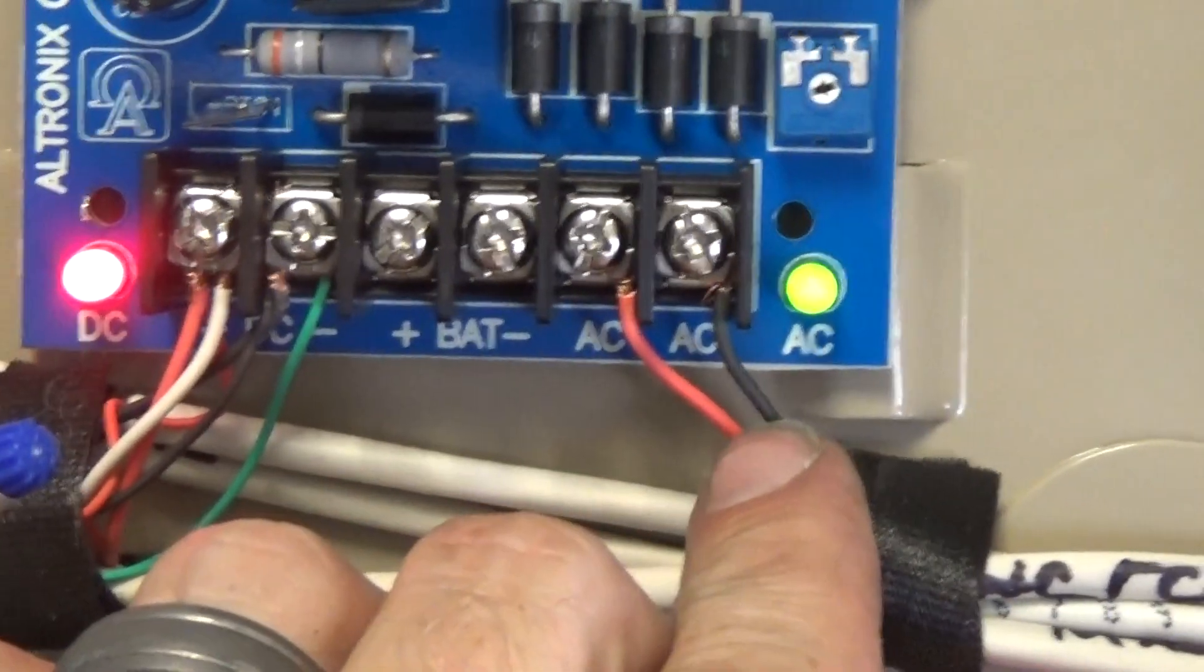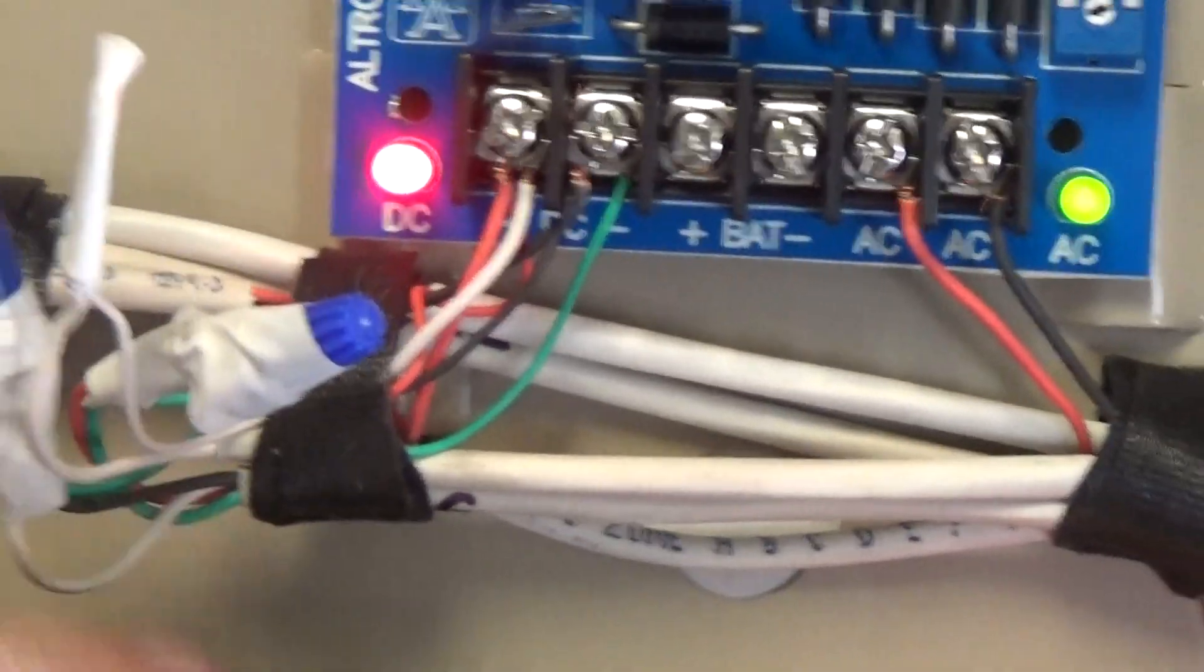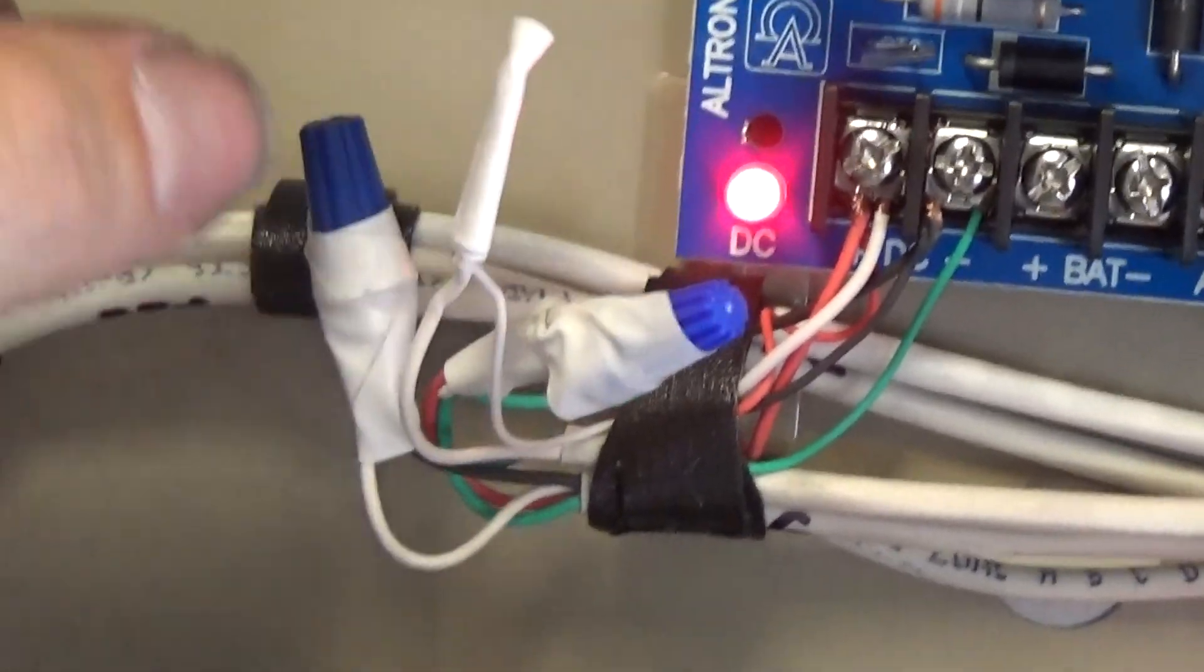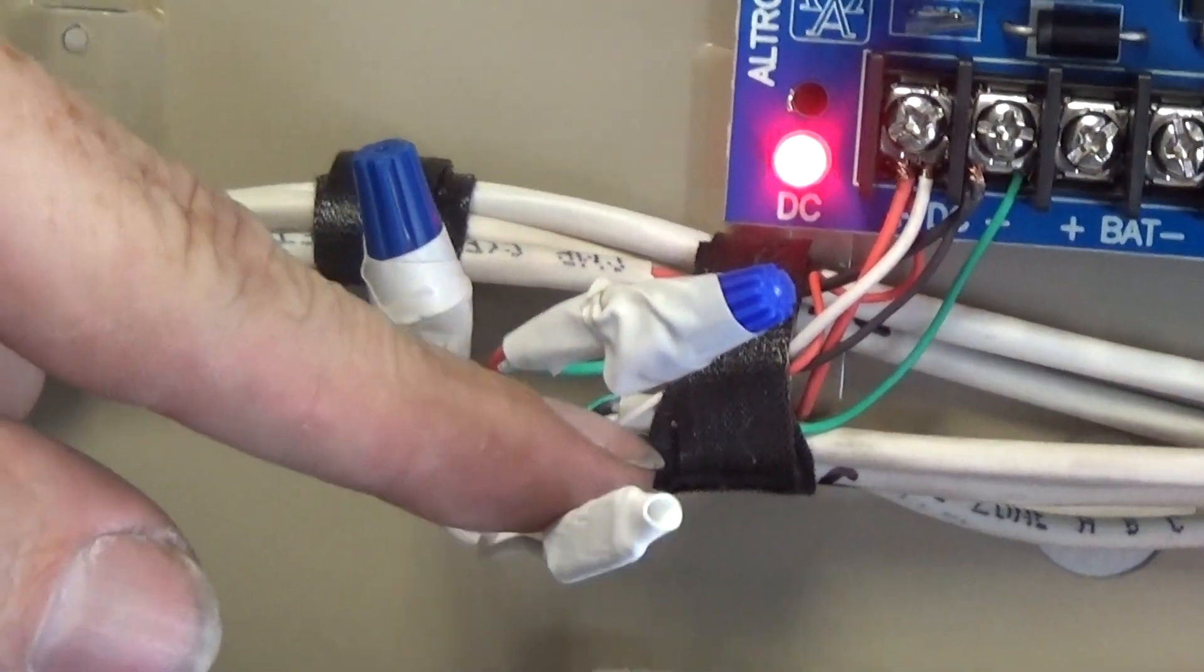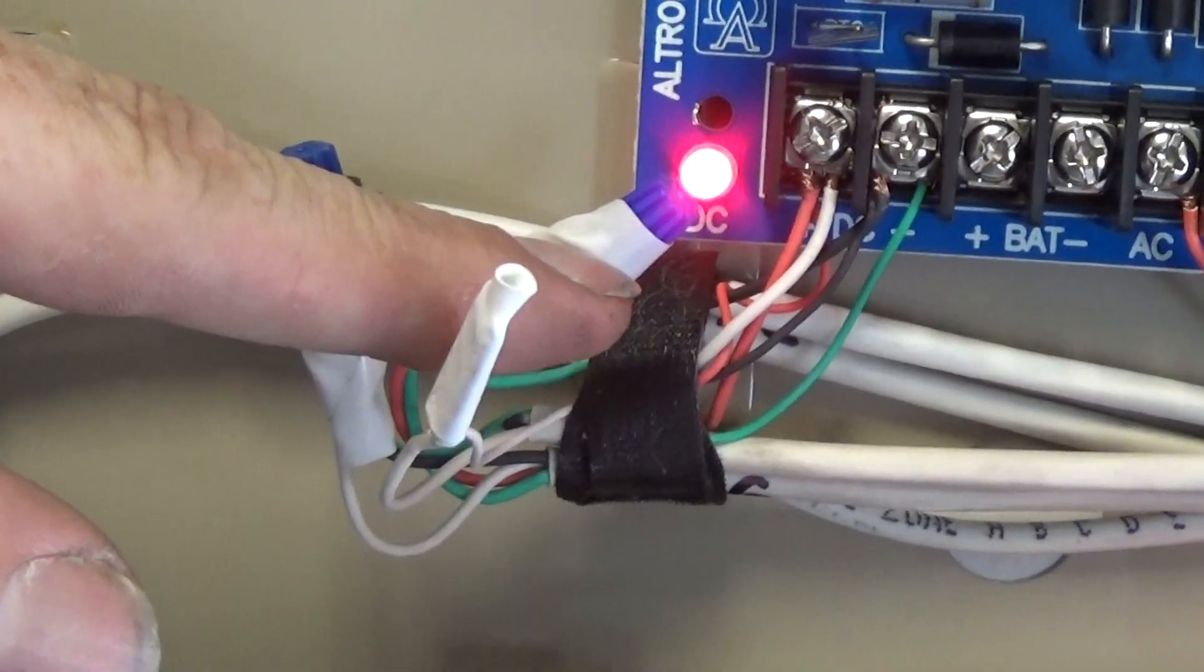These right here, just the two power wires for it. The way we have this hooked up is we have it hooked up in a series, so each one of these, one of these is the passive infrared request to exit, the other one is the push button request to exit.